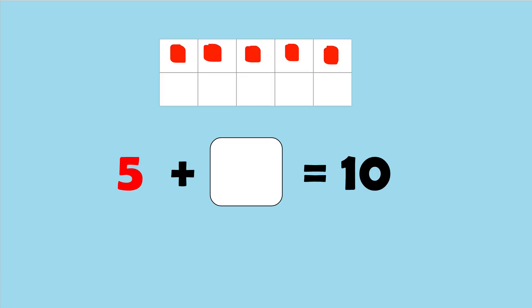When we want to figure out the missing addend, we can start by using our 10 frame. We know how many we have, and now we need to figure out how many more do we need to make 10. In this one I have 5. How many more do I need to add to make 10?